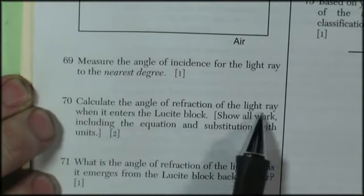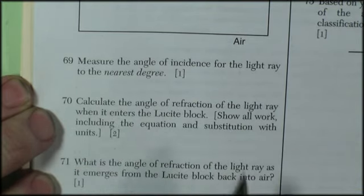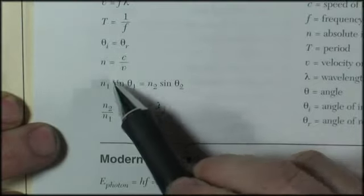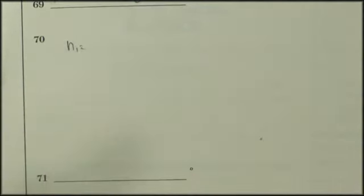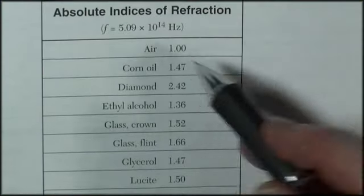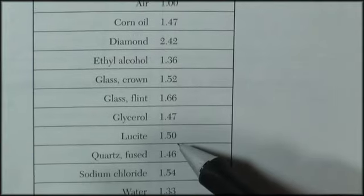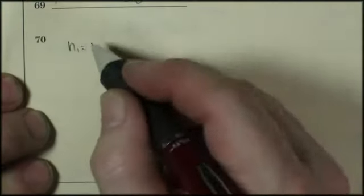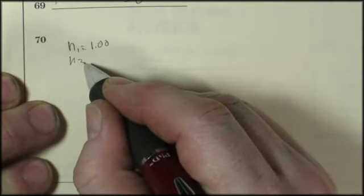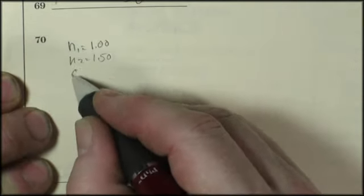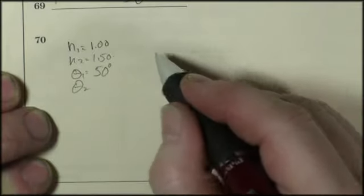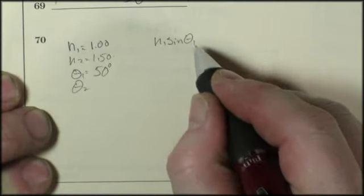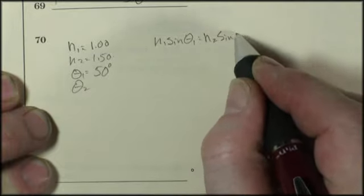Calculate the angle of refraction of the light ray when it enters the lucite block. Show all work, including the equation, and substitution with units. So my equation is N1 sine theta 1 equals N2 sine theta 2. So I'm in air, and the index of refraction for air is 1.00. Going into lucite, index of refraction of lucite is 1.50. So N1 is 1.00. N2 is 1.50. My angle of incidence is 50 degrees. I'm looking for my angle of refraction.